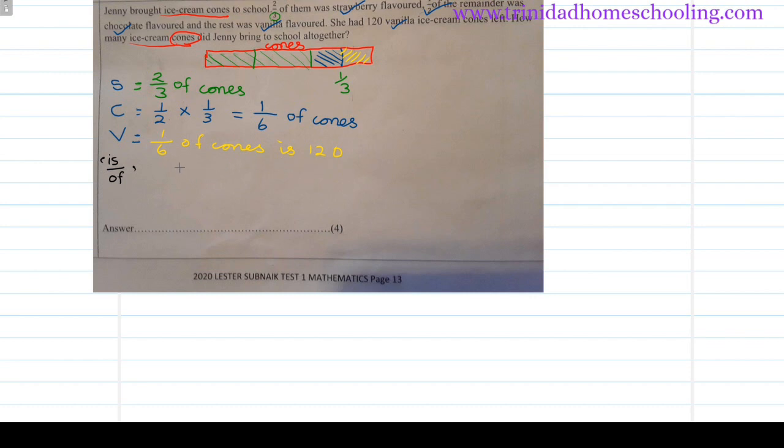'Is' being the 120, 'of' being one-sixth, and a division sign. When we divide by fractions, we change the sign to multiplication and we invert the second part. So 120 times 6 is 720, and this is how many ice cream cones altogether.